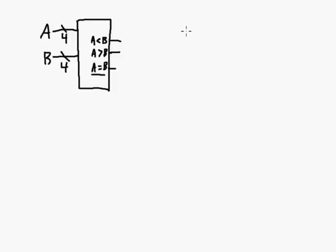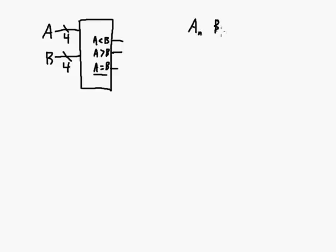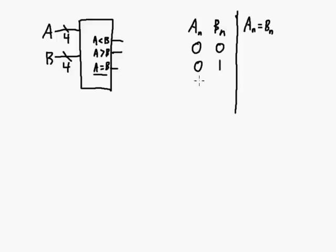Let's look at a single bit - bit n of A and bit n of B. We want to determine when bit n of A equals bit n of B. With two single bits there are four possible combinations: 00, 01, 10, 11. The bits are equal when both are zero or both are one, and not equal otherwise.